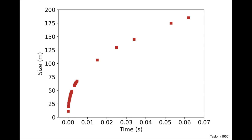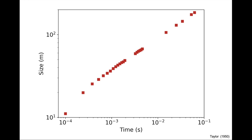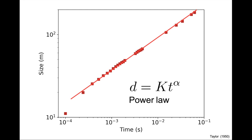If the data are represented in logarithmic scale, we recover a straight line — what can be called a power law, where the size d of the explosion is proportional to time to a power alpha. The power alpha is the slope of the line in log scale. In this particular case, the size increases by two decades when the time increases by five decades, so the exponent alpha is two over five. Where does this strange exponent come from?